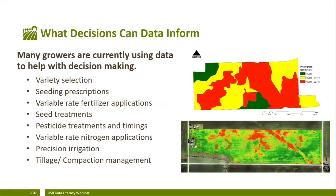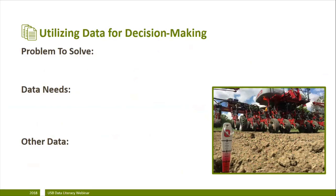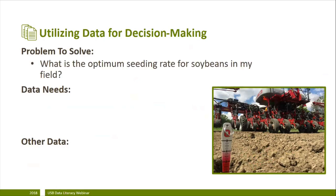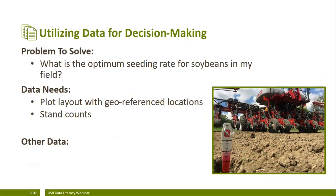Many growers are currently using data to help with their decision-making: variety selection, creating seeding rate prescriptions, or variable rate fertilizer applications, just to name a few. When using data to make a decision, it's important to have a strategy. First, identify the problem you're trying to solve, then target your data collection to address that question. For example, if the problem is what is the optimum seeding rate for soybeans in a specific field, taking an on-farm research approach would require a plot layout with geo-referenced locations, stand counts to ensure the planter is executing the prescription, yield monitor data to assess results, and potentially as-planted data or aerial imagery.